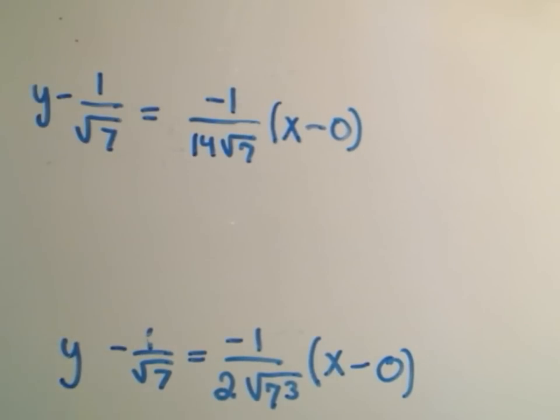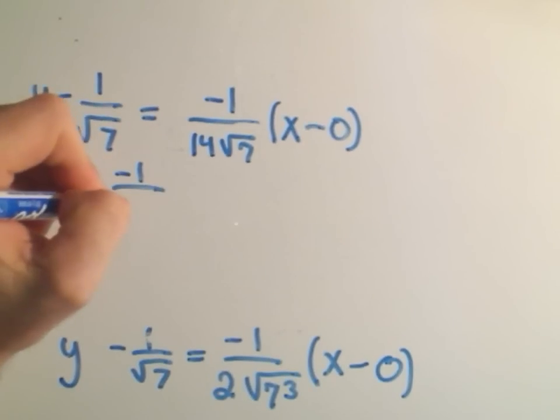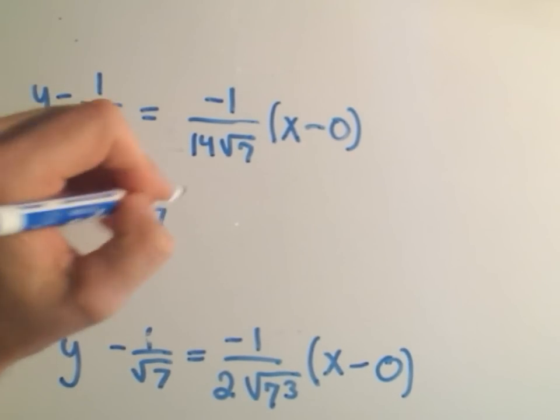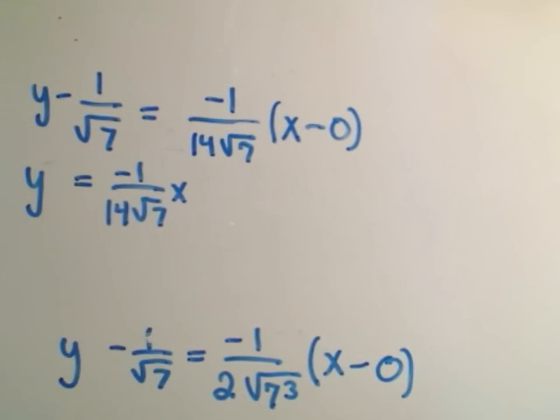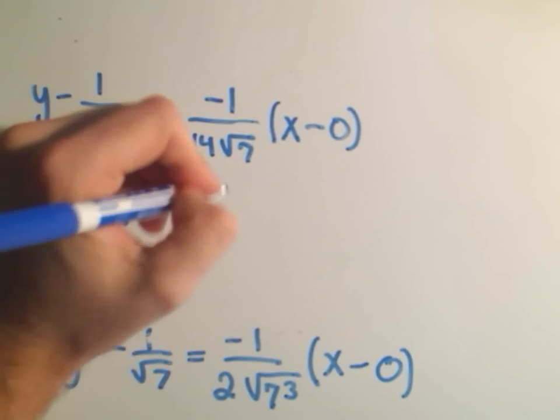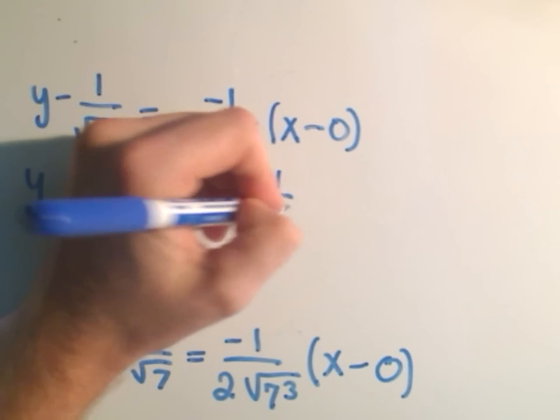x minus the x coordinate, which is 0. So we'll get y equals negative 1 over 14 root 7 x. The 0 part will cancel out. And then we have to add 1 over square root of 7.